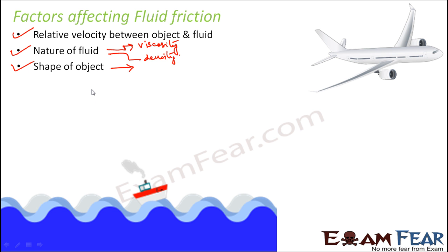The shape of the object also affects fluid friction, and that is where streamlining comes into picture. Certain organisms exist naturally that travel very comfortably through fluid — one such example is a bird. Look at the shape of a bird and compare it with the shape of an aeroplane; they have similarities. The aeroplane was constructed considering the shape of the bird, because the bird can fly comfortably through air, experiencing the least fluid friction. This process of designing an object so that it experiences least friction is known as streamlining.